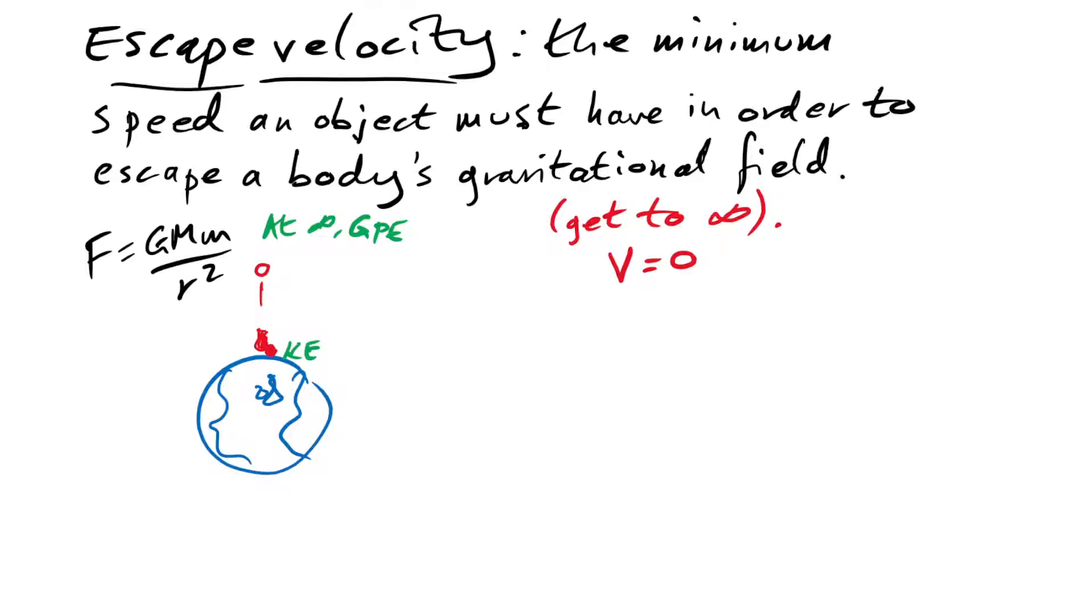It just has that potential energy. So we can say that all KE gets turned into GPE. And so at infinity in theory this object, if you fire it at the escape velocity, should go to infinity and then just stop and it shouldn't come back.